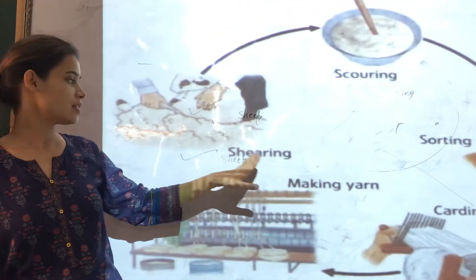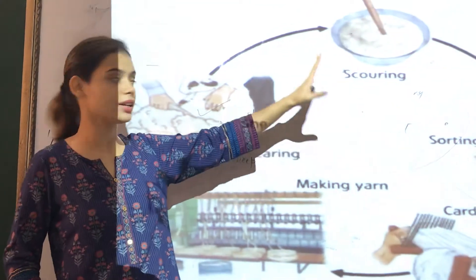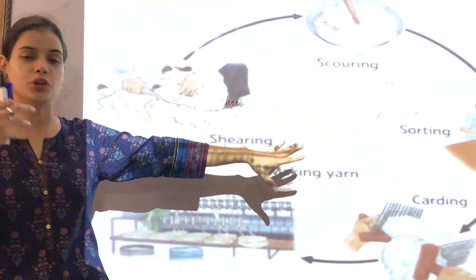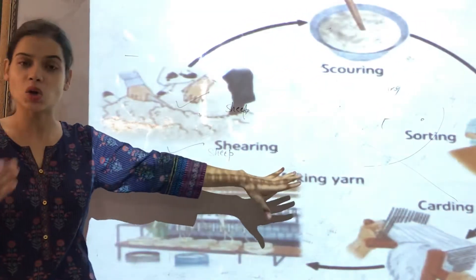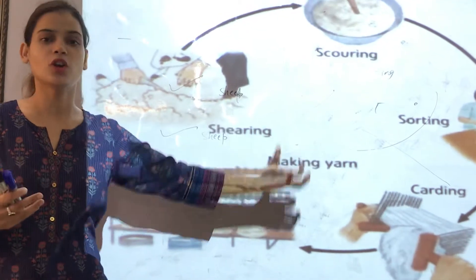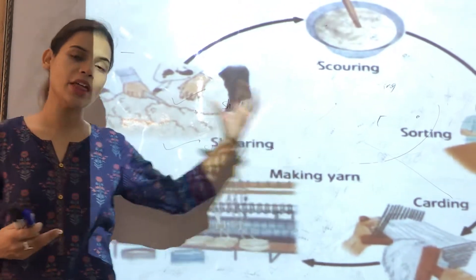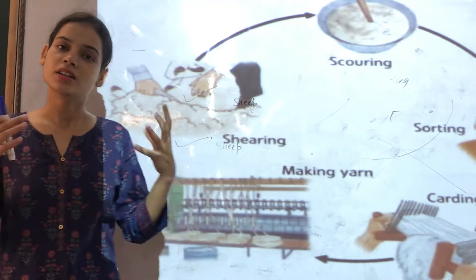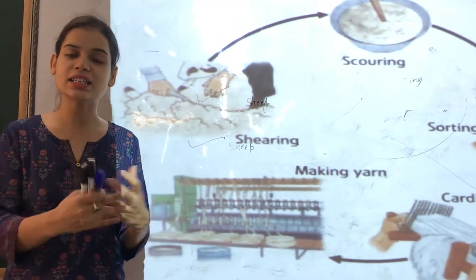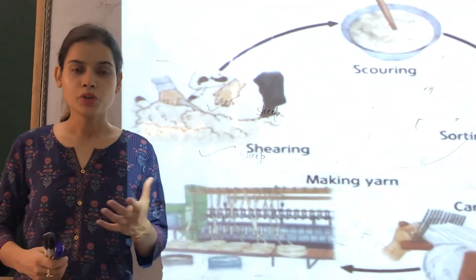The first step is shearing, then comes scouring, then comes sorting, then comes removal of burrs, then dyeing, combing, and then finally we get the yarn. We will now study these processes in detail one by one.